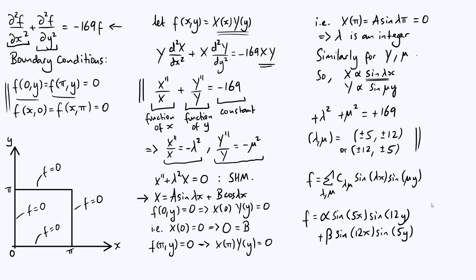If we'd chosen −170 instead, we wouldn't have been able to find integer λ and μ satisfying the constraint — it really does have to be −169, or indeed any number that is part of a Pythagorean triple. We could have done it with 3, 4, and 5 for instance. Hope this has been interesting, and see you again soon.